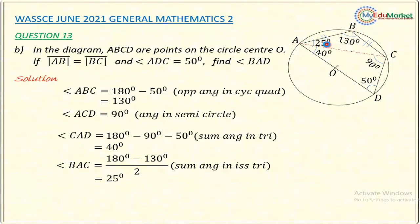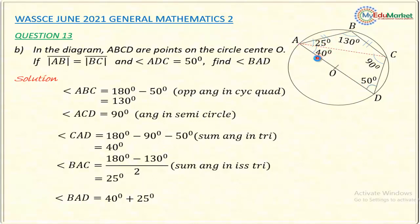Now my work is almost finished. To get angle BAD, I simply add the two angles: angle BAC (25 degrees) plus angle CAD (40 degrees). So angle BAD = 40 plus 25 = 65 degrees. Therefore angle BAD is 65 degrees.